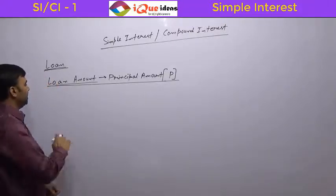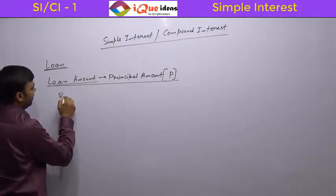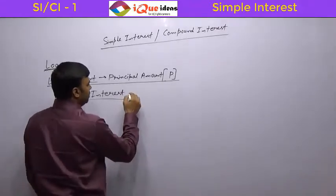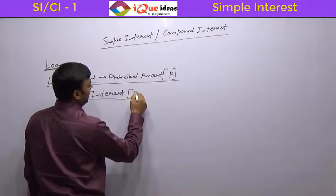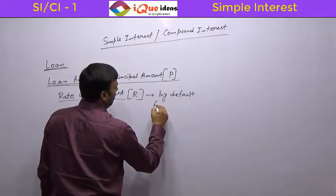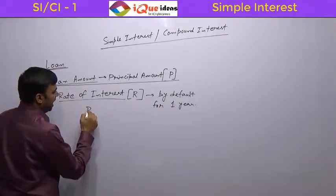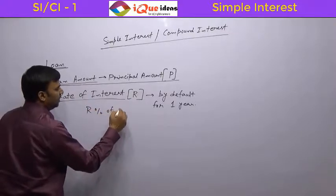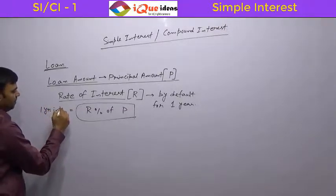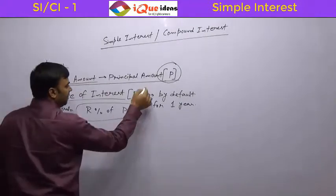The first thing we need to define is the rate of interest. Rate of interest is represented as R and it is by default defined for one year. Rate is always defined for one year, and it is R percent of the principal amount. So one year interest is R percent of P. There are two important terms: the principal amount P and the rate of interest R.